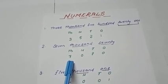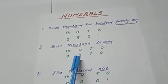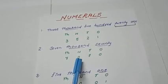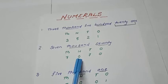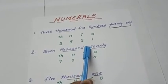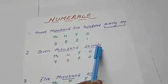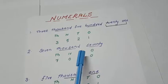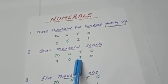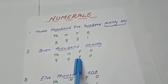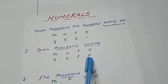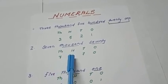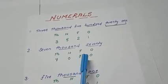How many hundreds here? 0. This means the hundreds place we take as 0. How many tens here? 70. 70 means 7 tens and 0 ones. So under tens I will write the number 7, and under ones, 0. So the numeral is 7070.